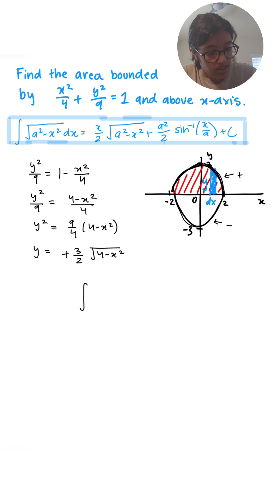So I'm going to say integration 0 to 2 because we're going from 0 to 2 of this part right over here and then we do height times width. So y times dx. We know y is 3 over 2 square root 4 minus x squared, dx.